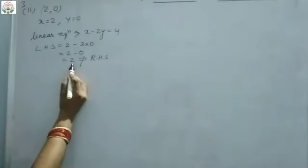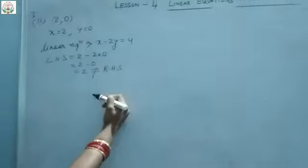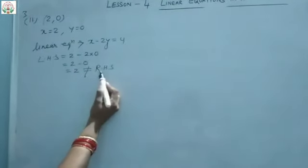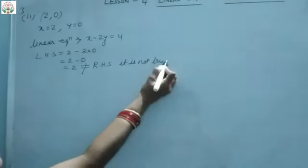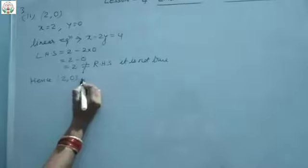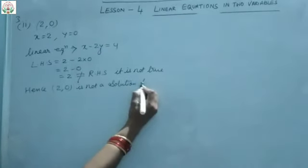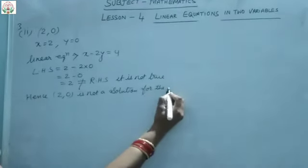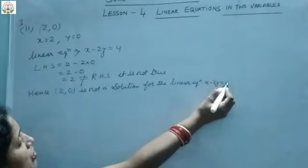No. The result is 2 here, but the actual RHS given is 4. These two numbers are not matching with each other, so LHS is not equal to RHS. It is not true. Hence, (2, 0) is not a solution for the linear equation x minus 2y equals 4.